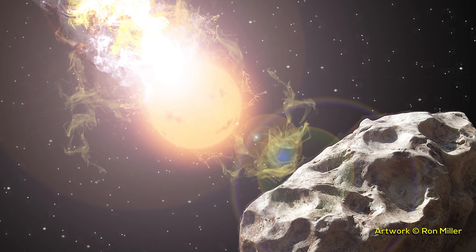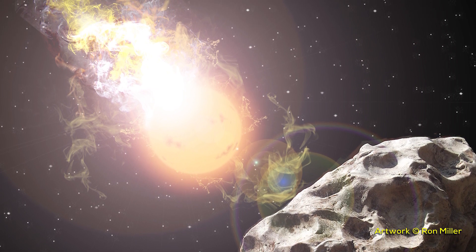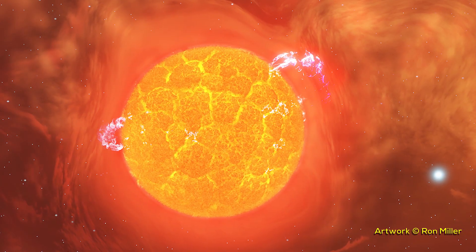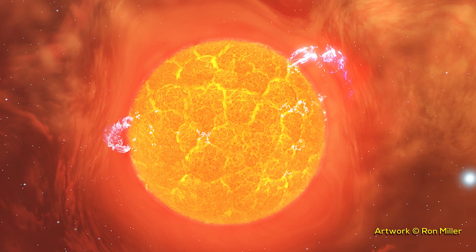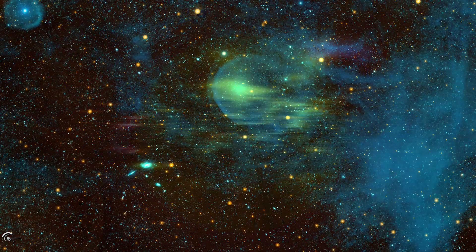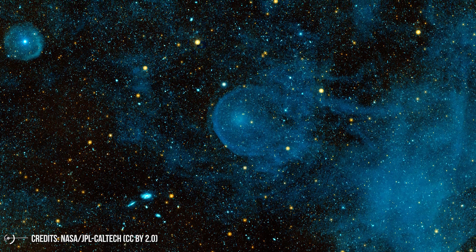To the naked eye, Mira A is a variable star that essentially disappears and then reappears almost every 11 months. What makes Mira so interesting? What's going on in the system is that Mira A, the red giant is shedding material into space, and some of this material then accretes around Mira B.